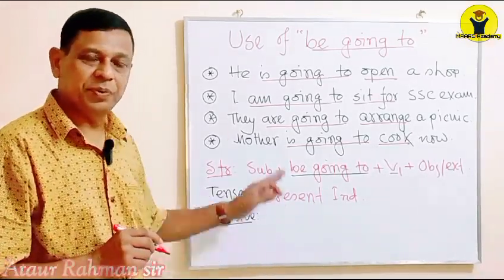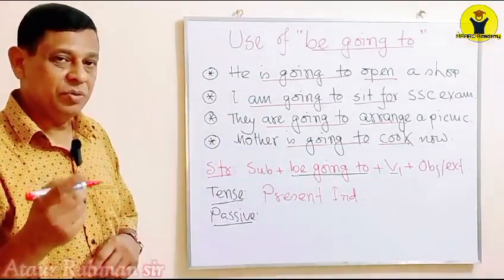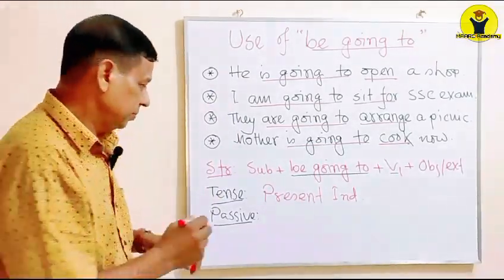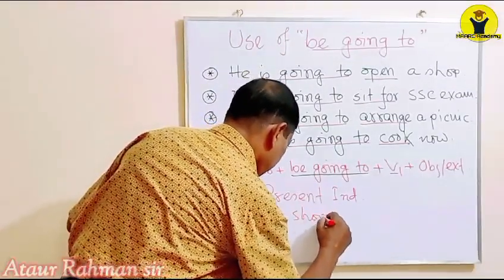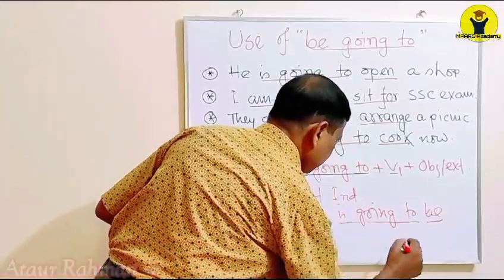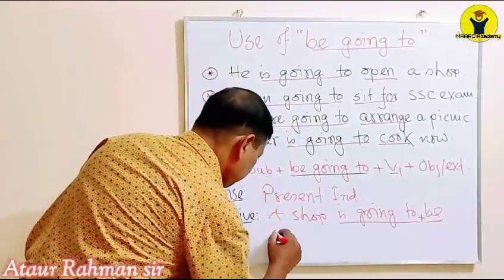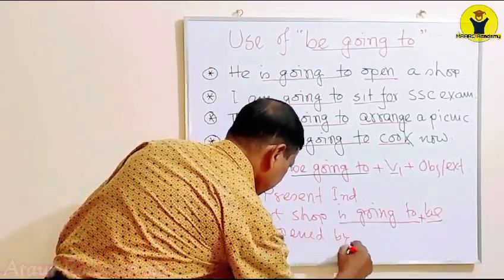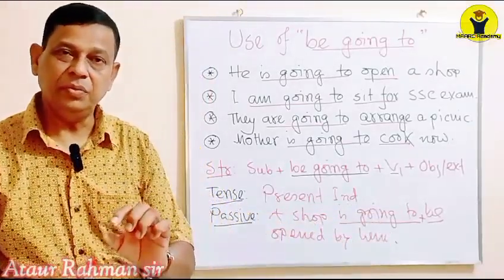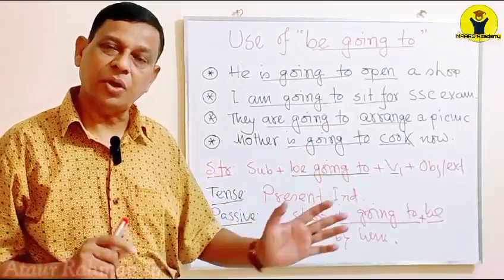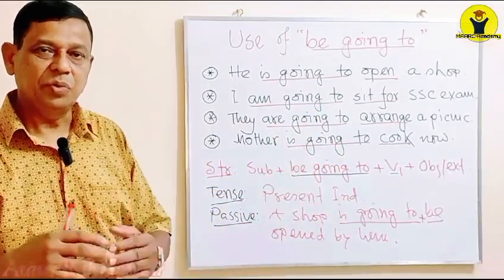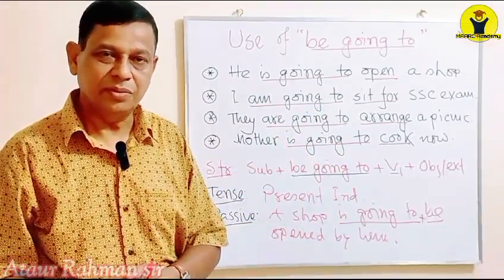Then, what would be the passive form? I will change the passive form of number one only. First sentence: 'He is going to open a shop.' Here, 'a shop' is the object. Passive: 'A shop is going to be opened by him.' In passive form, a modal auxiliary always takes 'be' with it. Remember this and learn how to frame more sentences with 'be going to'. Thank you very much.